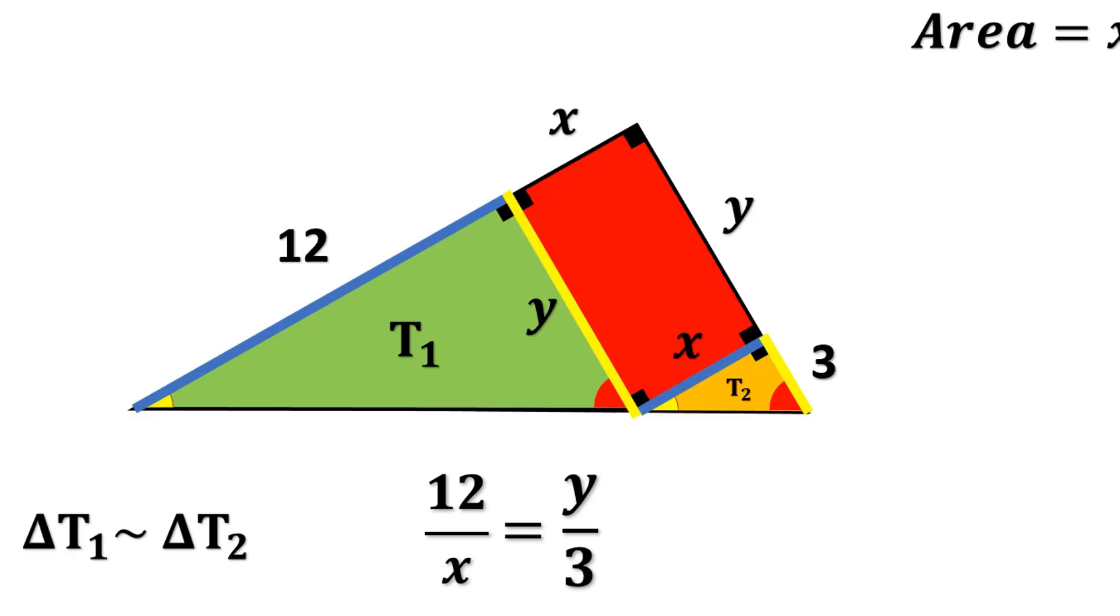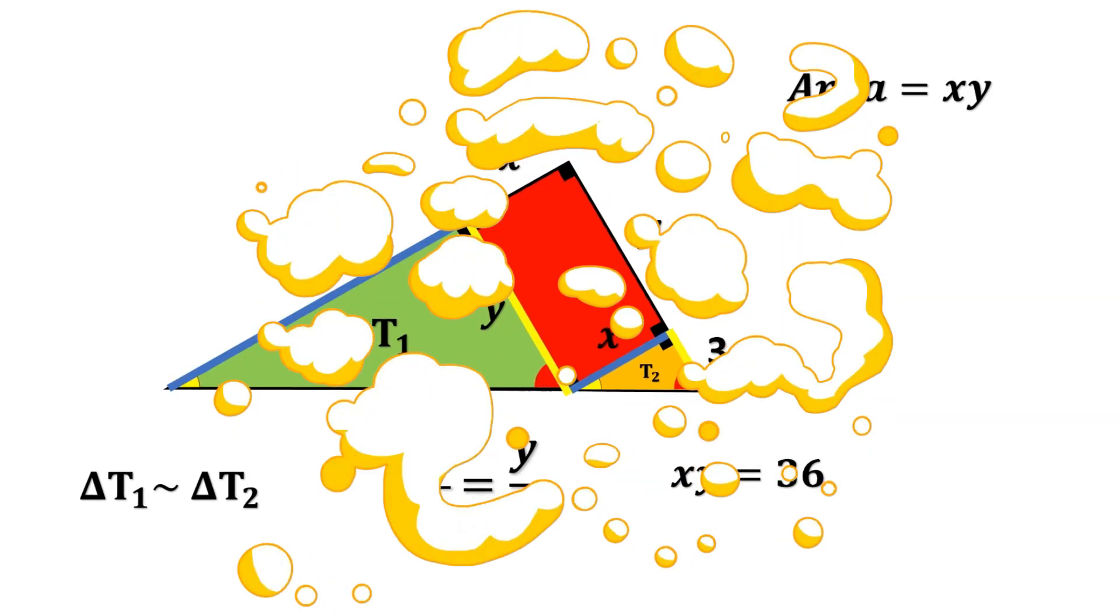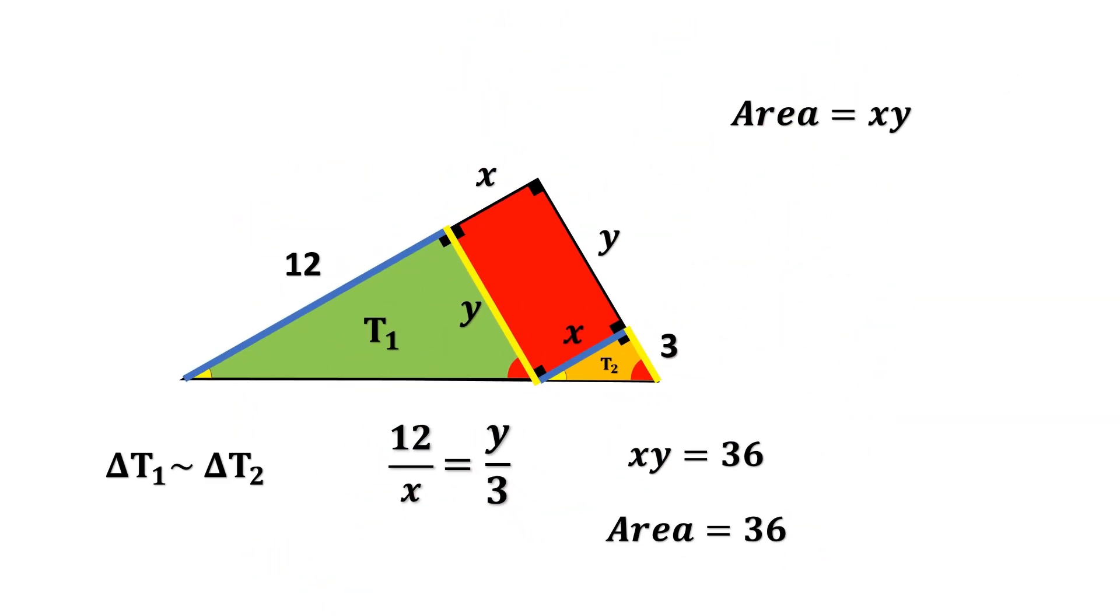Now we simply cross multiply. X times Y equals 12 times 3, which gives us XY equals 36. And boom! The area of the rectangle, which is X times Y, comes out beautifully. 36 square units.